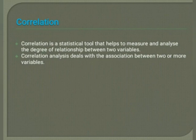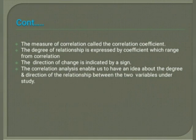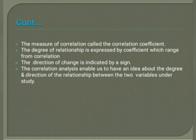So that movements in one tend to be accompanied by movements in another. The degree of relationship is expressed by a coefficient, which ranges from the correlation coefficient. The direction of change is indicated by a sign. Correlation analysis enables us to have an idea about the degree and direction of the relationship between two variables under study.